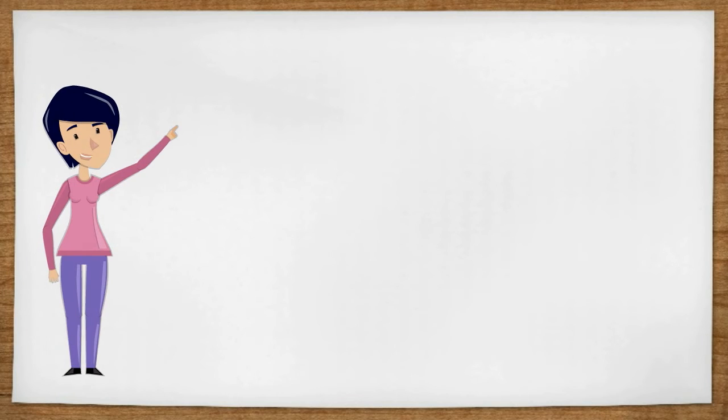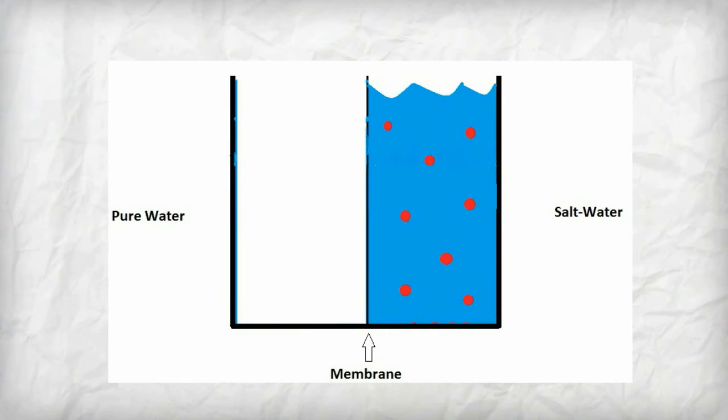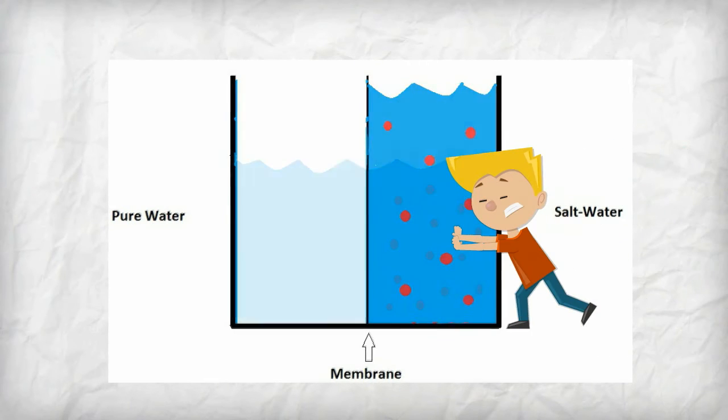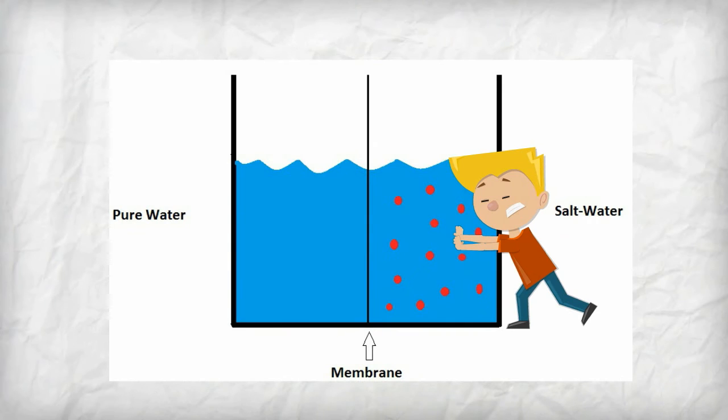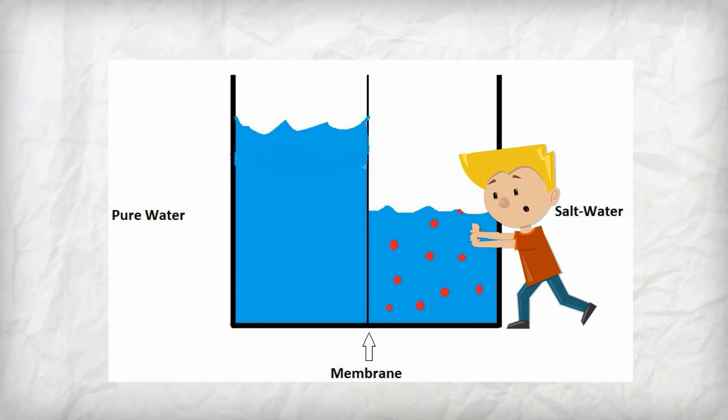To desalinate, membranes are used in a process called reverse osmosis. This process involves tanks divided by a membrane. Pressure is applied to the salt water side, forcing water through the membrane from the side where there is more salt to where there is no salt. Since the membrane only lets liquids in, the salt gets left behind.